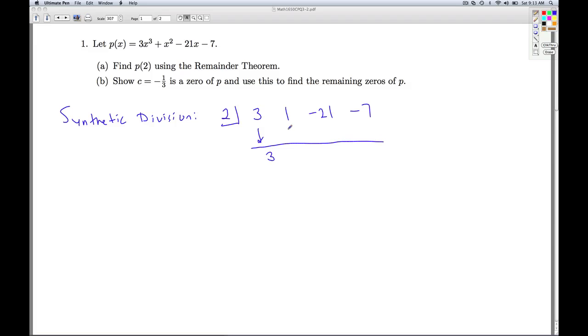Step 1, we bring down the 3. 2 times 3 is 6. 6 plus 1 is 7. 2 times 7 is 14. Negative 21 plus 14 is negative 7. 2 times negative 7, negative 14. Add negative 21. This is our remainder here. And according to the remainder theorem, p of 2 is negative 21.